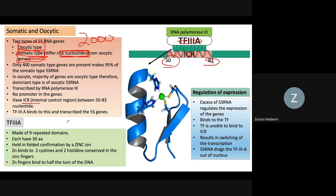The start of the gene is upstream at position 1, and transcription extends downstream to position 120. The transcription factors and enzymes bind somewhere between positions 50 to 83 — in the middle of the molecule. So for a 120-nucleotide gene, the ICR is located in the middle of the gene.